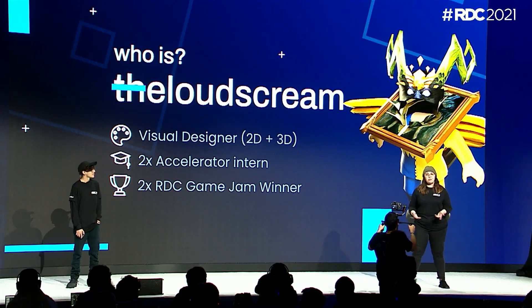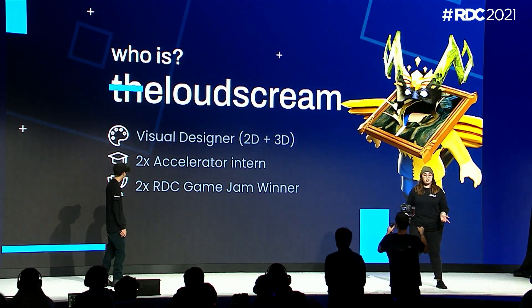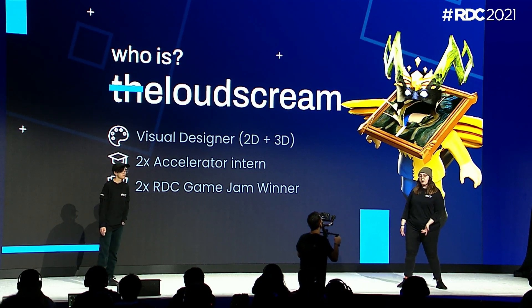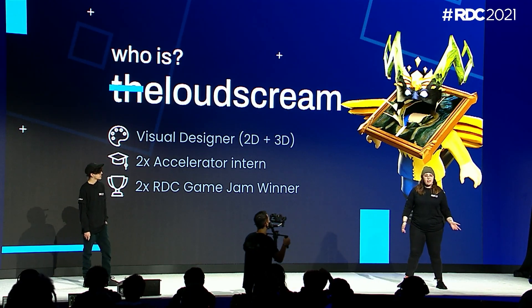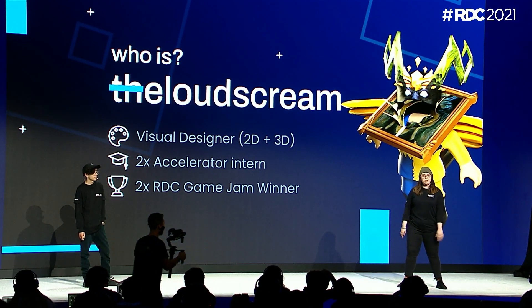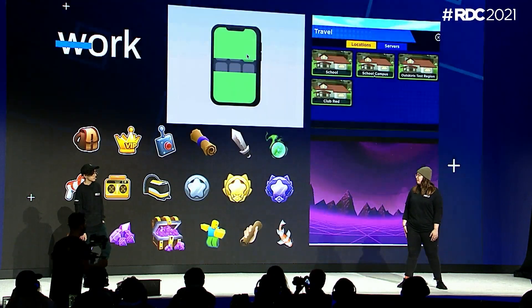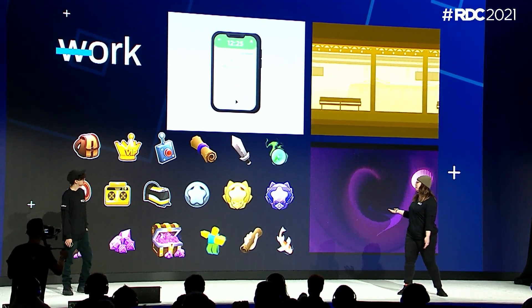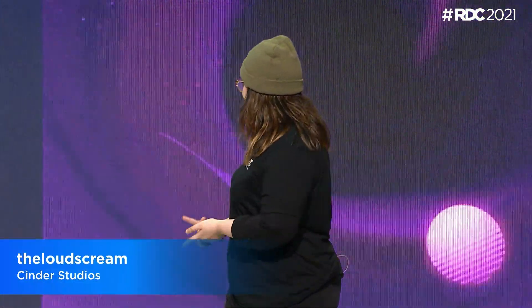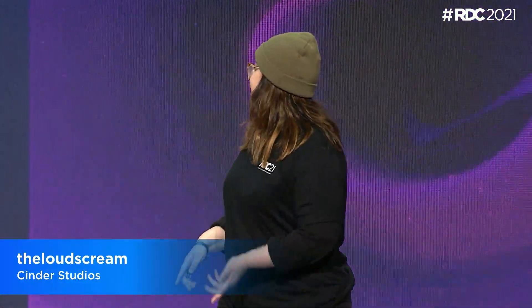Hi everyone. I am Bella, a visual designer. I do a lot of stuff like 3D design, 2D design, including icons, textures, and skyboxes. I currently work full time at Cinder Studios. This is some of my current work that I've done for games such as Pet Simulator X, Roblox High School 2, and more.